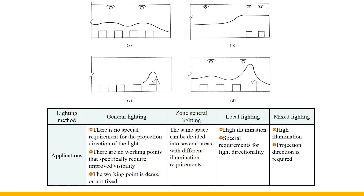Figure D is combined lighting. It consists of general lighting and local lighting, and can meet the requirements of high illumination and precise light direction at the working point. It is more economical for places with high illumination requirements. In order to avoid excessive brightness contrast, there are requirements for the ratio of the illuminance of general lighting to the total illuminance.